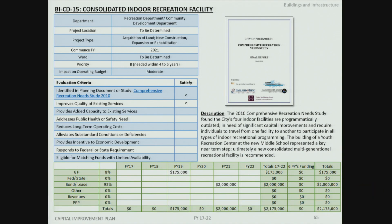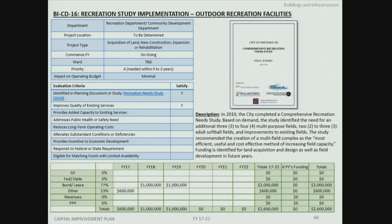The consolidated indoor recreation facility project is an outgrowth of the 2010 recreation needs study, serving as a placeholder for moving forward with a multi-generational recreation center. The outdoor recreation facilities project addresses the study's finding that the city needs approximately three to five regulation-sized rectangular recreation fields, which are in high demand, with funding set aside to make progress on adding to the city's field inventory.